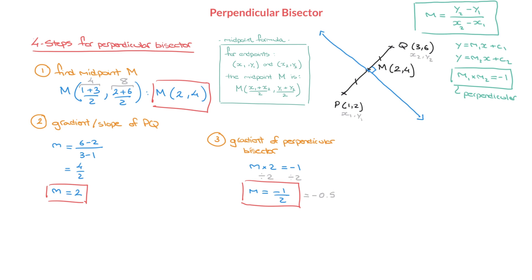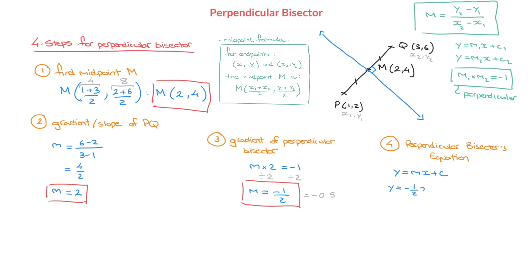Before moving on to the fourth and final step, go ahead and check: take −0.5 and multiply it by 2, and you'll find it equals −1, which confirms this is indeed the gradient of the perpendicular bisector. Now I move on to the fourth and final step, which is to find the perpendicular bisector's equation. The perpendicular bisector is a line, so its equation can be written in the form y = mx + c. We saw in step 3 that the gradient m = −1/2, so the equation looks like y = −(1/2)x + c.